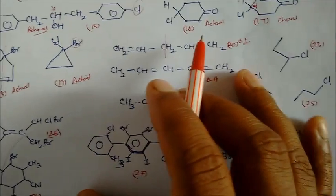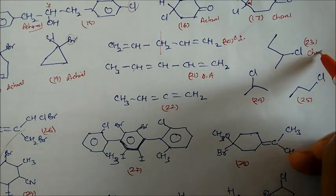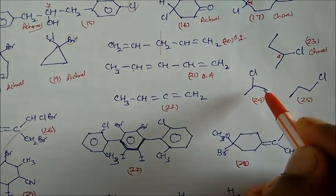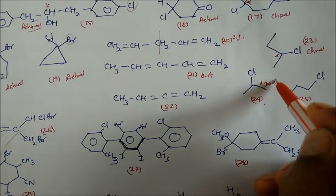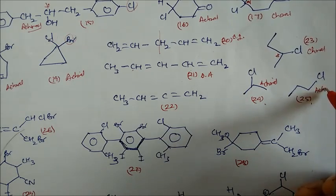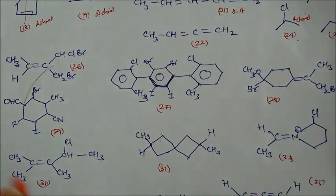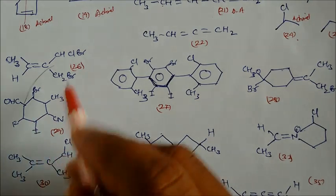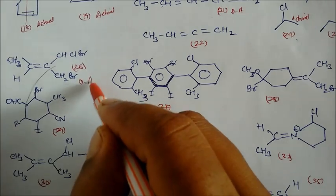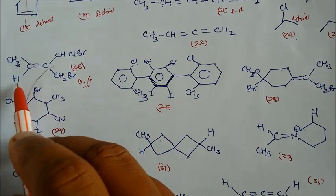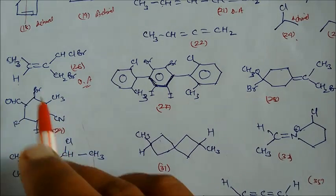Compound 22 is also a chiral compound — you can see the chiral carbon here. Compounds 24 and 25 are all achiral — both are achiral to each other. This other compound is also achiral. And this is also a chiral, optically active compound — CH3 and hydrogen groups are different here, so this is also an optically active compound.